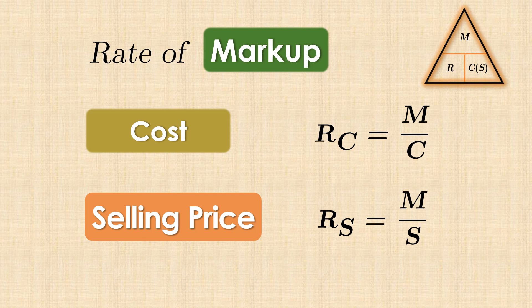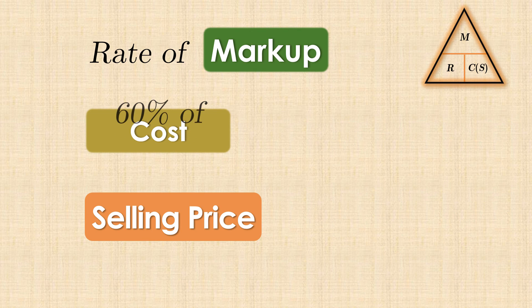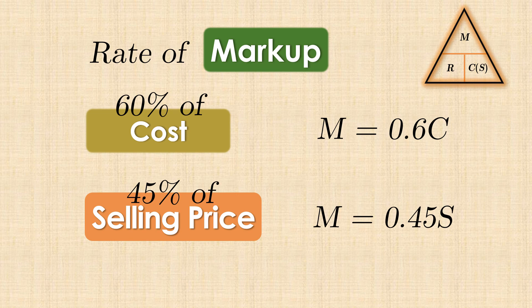And we have to multiply these by 100% to convert them from decimal to percent. So if markup is 60% of cost, for example, we write M equals 0.6C. And if markup is given as 45% of Selling Price, we write M equals 0.45S.